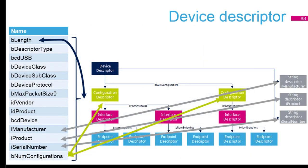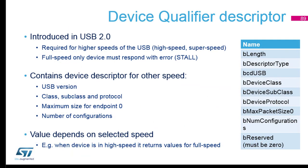In the device descriptor, we have the number of configurations that we can request, and also the manufacturer information that we can request. Then we can request other parts of the structure. Regarding the device qualifier descriptor — this is needed for high speed. If you have the capability to do high speed, you will have to describe how to use it, so you have some additional structures for that.